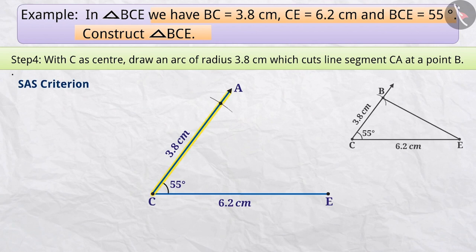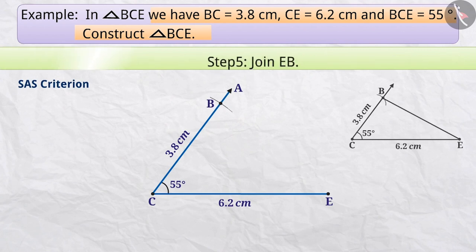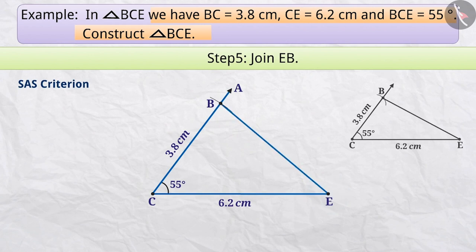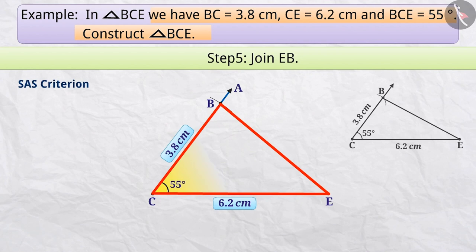This point of intersection is also the vertex B of the triangle. Step 5: Now we will join vertex B and vertex E to form EB. Thus, we have obtained triangle BCE where BC equals 3.8 cm, CE equals 6.2 cm, and angle BCE equals 55 degrees.